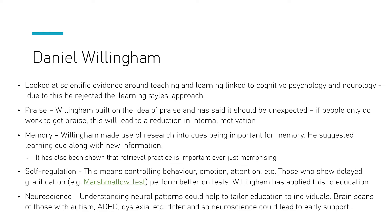That brings me nicely on to Daniel Willingham. Willingham is a cognitive scientist and a strong critic of learning styles. He looked at scientific evidence — as a cognitive psychologist he also examined neurology — and asked what we know about how people think and how that can help development and learning. By linking cognitive psychology and neurology, he rejected learning styles, since there's no research support for them.